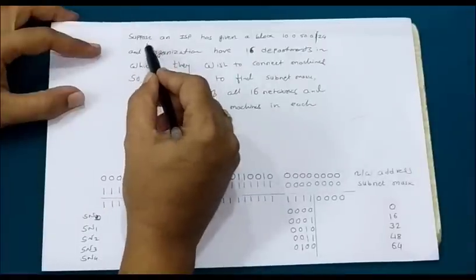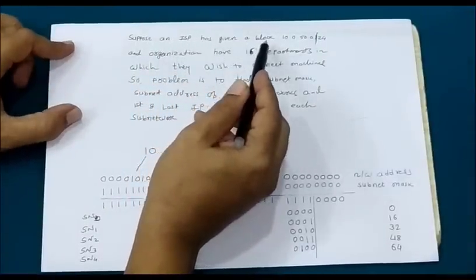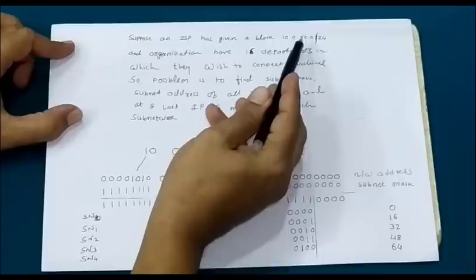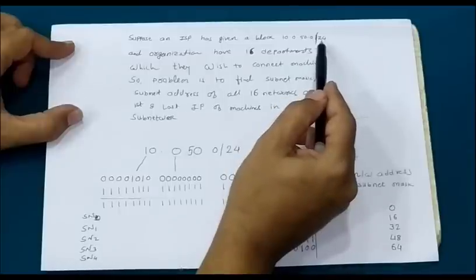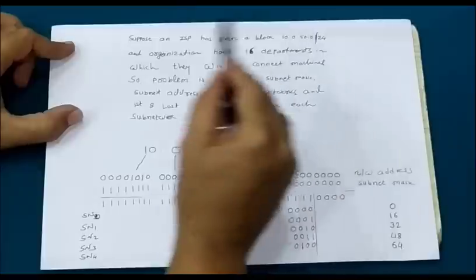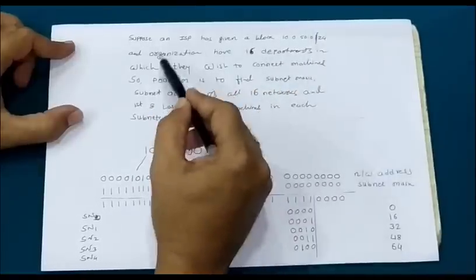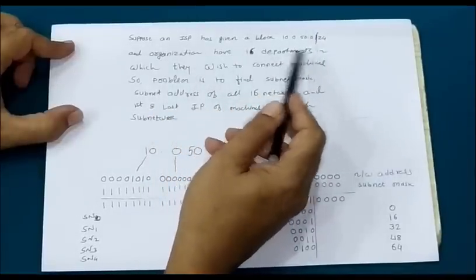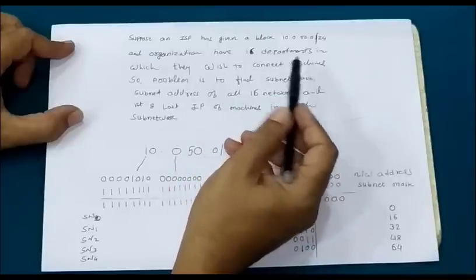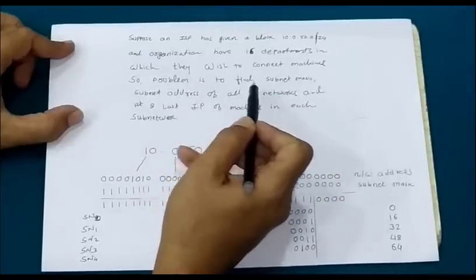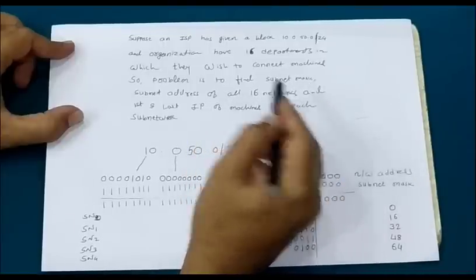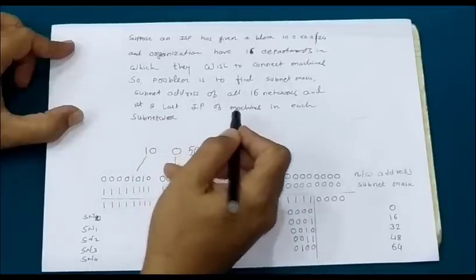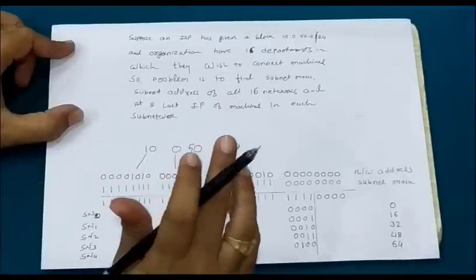Suppose an ISP has given a block 10.0.50.0/24. This is CIDR notation — 24 indicates the subnet mask, and the leftmost 24 bits are supposed to be set to 1. A block is given to you and the organization has 16 departments in which they wish to connect machines. The problem is to find the subnet mask, subnet address of all 16 networks, and the first and last IP of machines in each subnetwork.